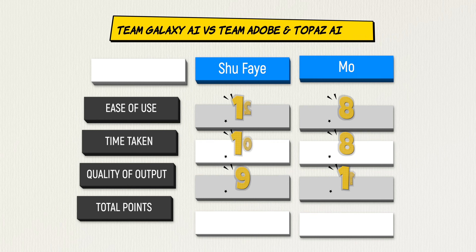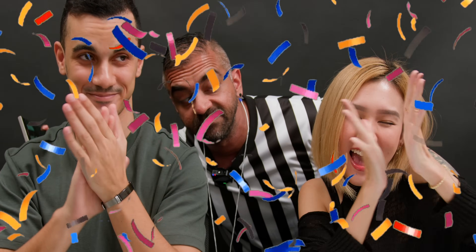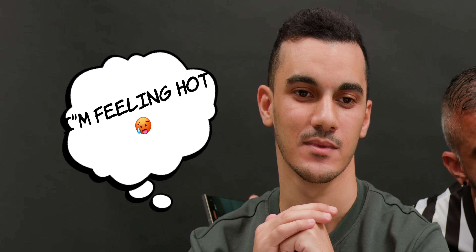It's winner announcement time. Most viewers probably already know who won. The winner is Team Galaxy AI — Shufei. She gives an enthusiastic acceptance speech, thanking her parents and herself, though the host notes she's giving herself credit rather than crediting the phone. Mo graciously congratulates her and acknowledges that being able to do all this on a phone is very impressive — he thinks they're all winners.